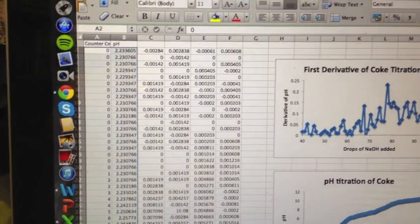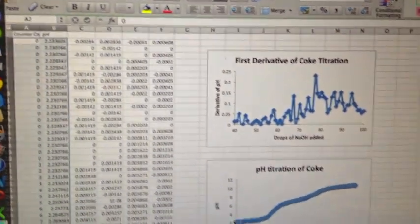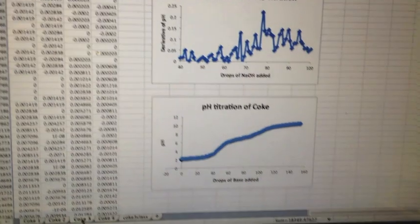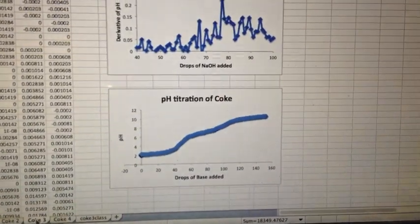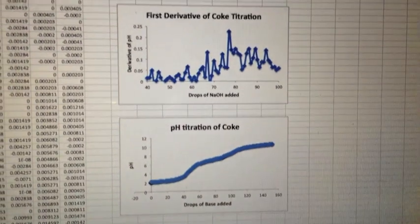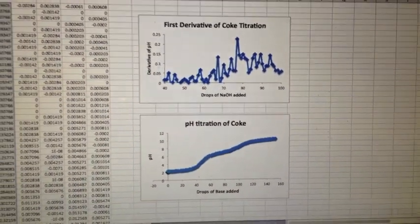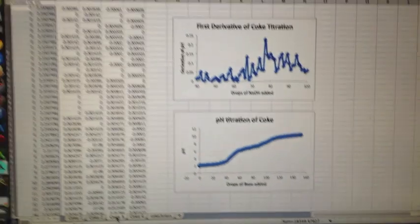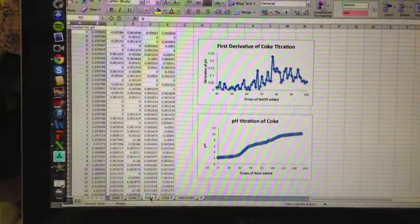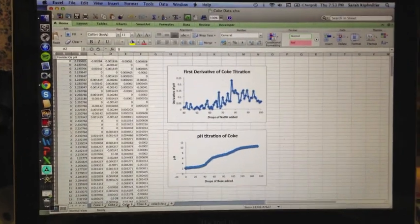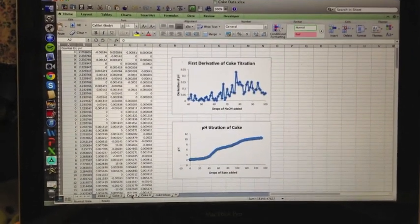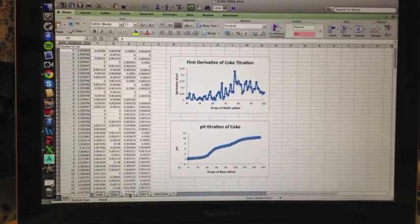Below, you can see our pH curve from our titration. It looks very familiar to what we saw using Microlab. And then above that, you will see a graph of the first derivative of this titration. The maximum point between 70 and 80 there marks the equivalence point of our titration. This shows us how many drops of NaOH were added to neutralize the phosphoric acid in the Coke. So once we know that value, we simply perform dimensional analysis to find out how much phosphoric acid was in the Coke.